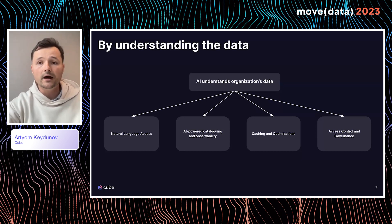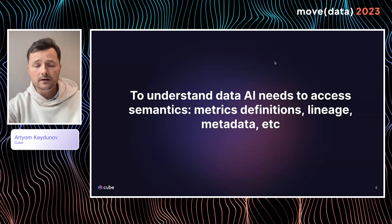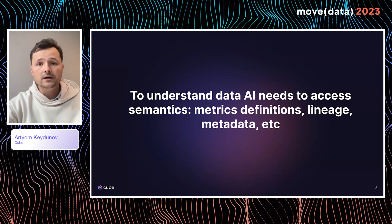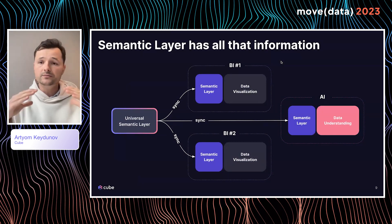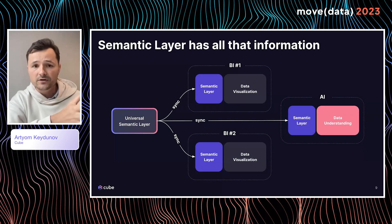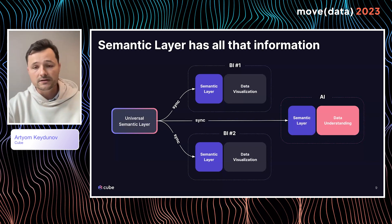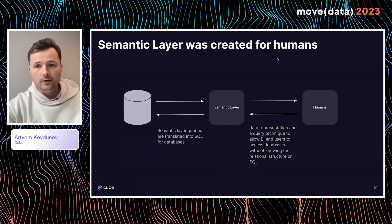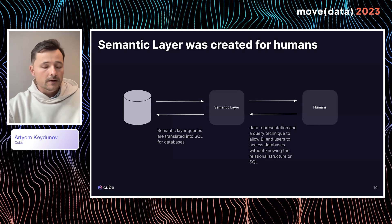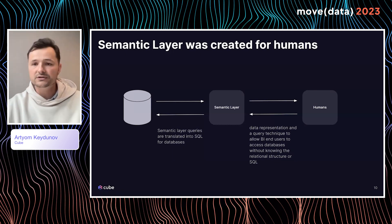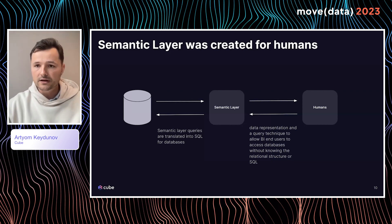The question is how we can make AI understand the data. To do that, AI needs to access data above the data — essentially the metadata, the metrics definitions, the lineage, all of that. That's the point where semantic layers and AI come together. If you look at this overall landscape, why did we have a semantic layer in the first place? We had them for humans and BI tools, so humans could understand data. But now we need it for AI too, so AI can understand the data.